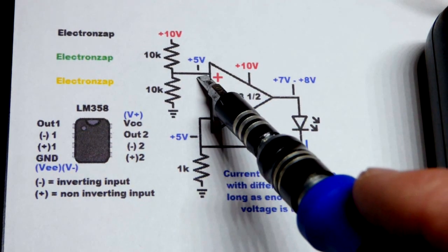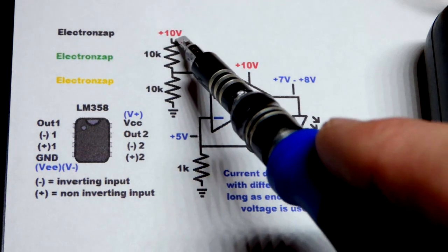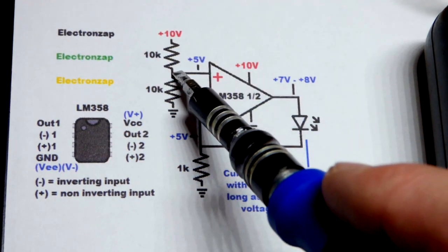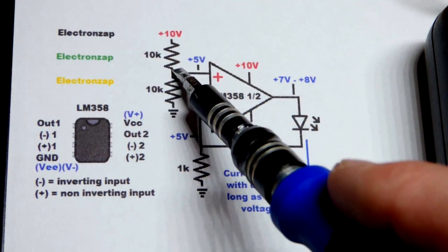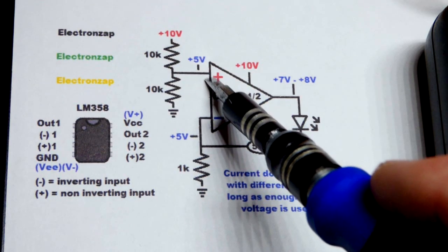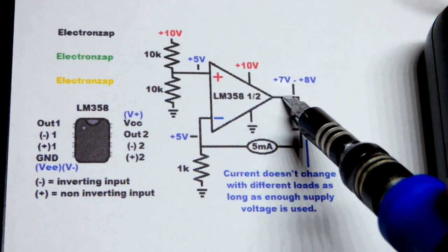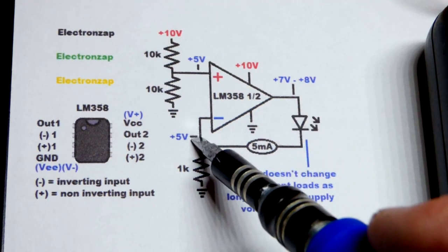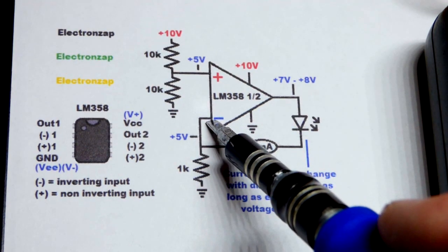We can set with a voltage divider, if we have a 10 volt power supply, two equal value resistors, that's what we're going to do, to set 5 volts at the non-inverting input. So the voltage is going to rise at the output until we got 5 volts at the inverting input.